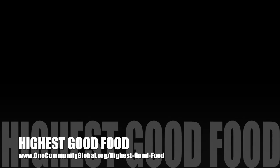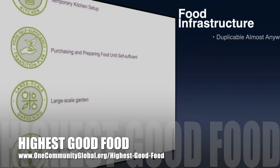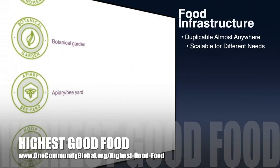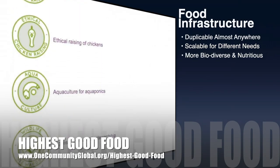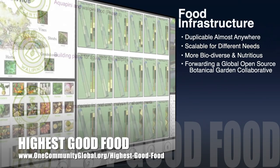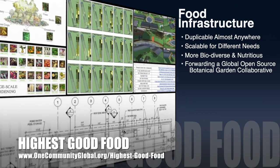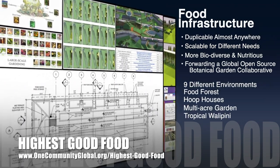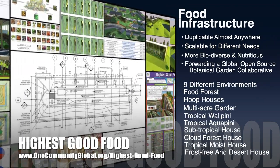One Community's approach to Highest Good Food is duplicable almost anywhere, scalable for different needs, more biodiverse and nutritious, part of forwarding a global open source botanical garden collaborative, and includes nine different free shared and duplicable growing environments.